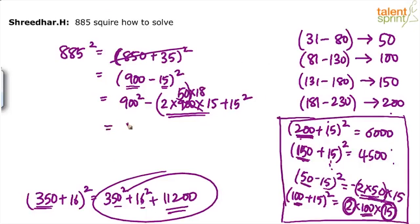So that's it. 900 square. How much is this? 810,000 minus 27,000 plus 225. So 810,000 minus 27,000. It's like 8 lakhs minus 17,000, which is 783,000. 783,225.